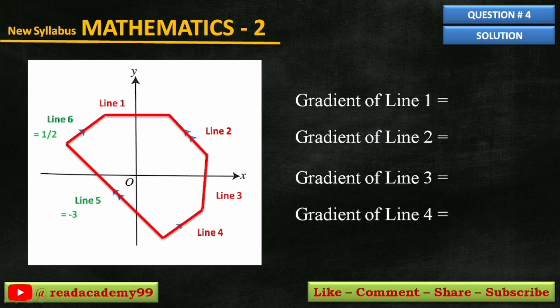Since line 1 is parallel to the x-axis, the gradient of line 1 is going to be 0.